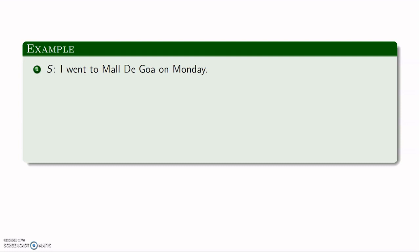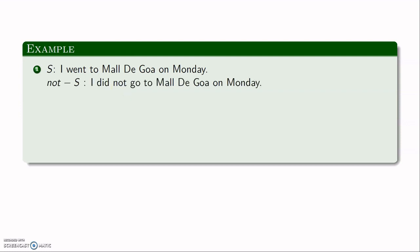Let us look at a couple of examples. If the statement S reads: I went to Maldi, Goa on Monday — then the negation not S would be: I did not go to Maldi, Goa on Monday. Now if I give you statement T: 5 plus 3 is equal to 9 — we know this statement is false. Its negation would be: 5 plus 3 is not equal to 9. It would not be 5 plus 3 equals 8, because in that case we are changing the statement.